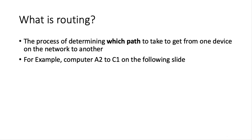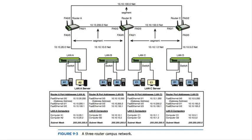Another example: if I want to send a packet from computer A2 to C1, the packet starts here, goes through a switch, and makes it to the router. This router is connected to router B, and router A is also connected to router C. If it wants to get to C1, it could go through B or go all the way over to C and then to B. Router A's choice is which path to take — and that's its job.